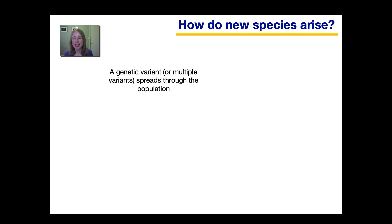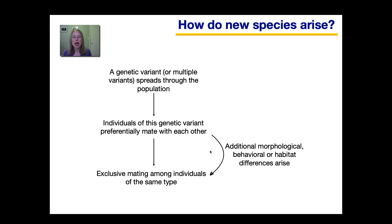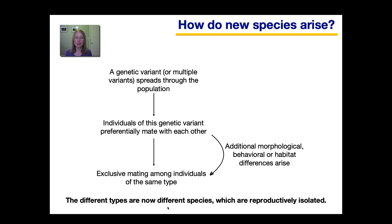To summarize, let's look at this diagram I showed you at the beginning. In order for speciation to occur, a genetic variant has to spread through the population. Gradually, individuals of this genetic variant will preferentially mate with each other — either because they are geographically isolated from the other variant, or in an overlapping geographic area where they might have different preferences, such as for the color of their mate. Over time, additional morphological, behavioral, or habitat differences arise, which eventually leads to exclusive mating among individuals of the same type, so these different types are now different species which are reproductively isolated.